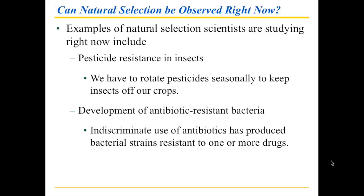Over the last 60 years or so, since we have been using antibiotics very widely, we have found a variety of resistant bacteria, and some are now resistant to more than one type of antibiotic. This is going to be a challenge. But there are also examples that take a little bit longer to establish, though if you do some measurements, you can figure this out.